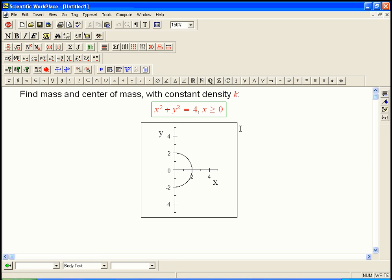Here's a quick example of looking at the mass and center of mass of a curve. You think of it as a wire with a certain density. So this is one of the book problems. We're looking at the semicircle, x squared plus y squared equals 4, so radius is 2. x greater than or equal to 0, so it's the right half of the semicircle. And we have constant density k.